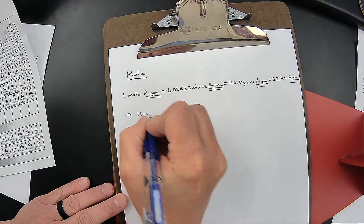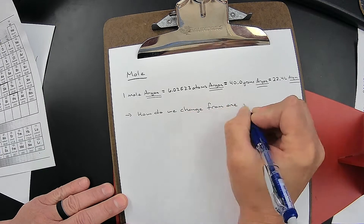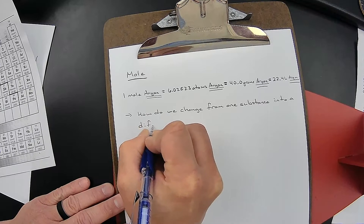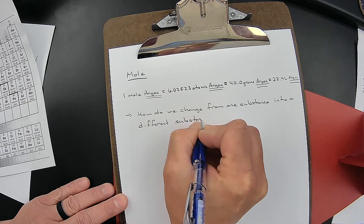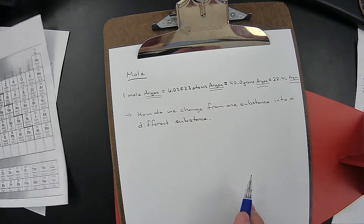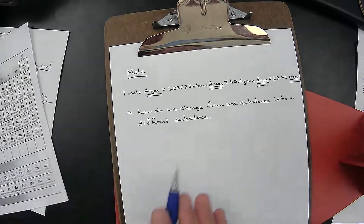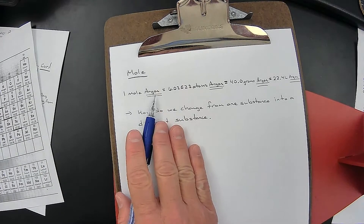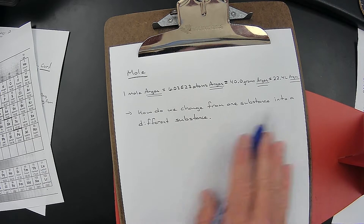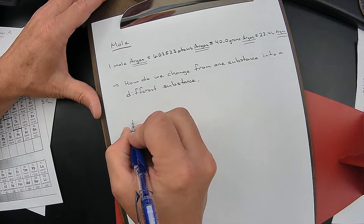The question becomes: how do we change from one substance, like argon, into a different substance? What if they give us a question about xenon but give us argon? Or give us chlorine and ask about fluorine? Or give us phosphorus and ask about iron? All the problems we've dealt with so far, we started with argon and ended with argon. But what happens if they ask us to change from one substance into a different substance? That's what this video is going to cover.